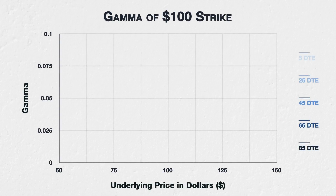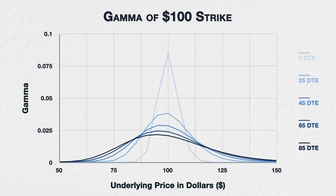Another variable that has a major influence on gamma is how much time is left before the option expires. Even if all other things remain completely static, the simple passage of time will have an effect on the gamma of an option. This chart shows the gamma of the $100 strike options based on where the underlying price is, with an implied volatility of 40% and various days to expiry. As we can see, this chart is very similar to the one from the previous lecture that showed the effect of varying implied volatilities on gamma. Whether the passage of time leads to an increase or decrease in gamma depends on where the underlying price is relative to the strike price.